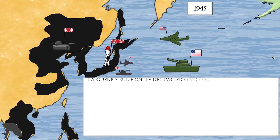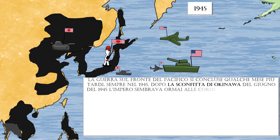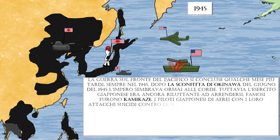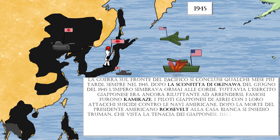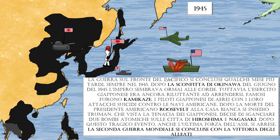The war on the Pacific front ended a few months later, also in 1945. After the defeat at Okinawa in June 1945, the Japanese Empire seemed on the ropes. However, the Japanese army was still reluctant to surrender. Famous were the kamikaze — Japanese pilots who carried out suicide attacks on American ships. After President Roosevelt died and Truman took office, seeing the tenacity of the Japanese, Truman decided to drop two atomic bombs on Hiroshima and Nagasaki. After this tragic event, the last Axis force surrendered, and World War II ended with the victory of the Allies.